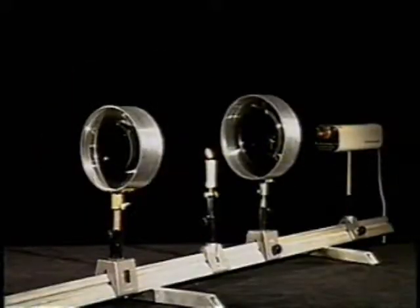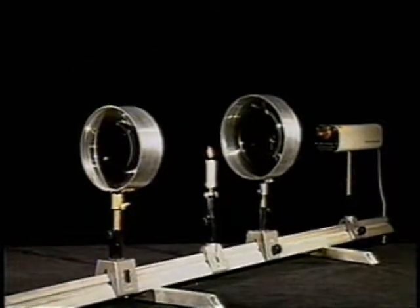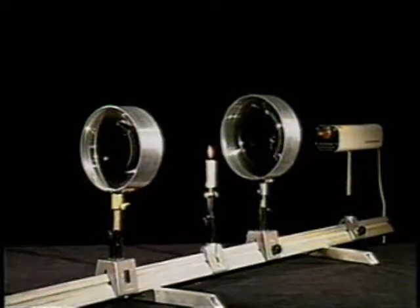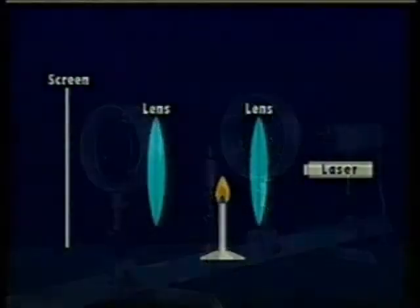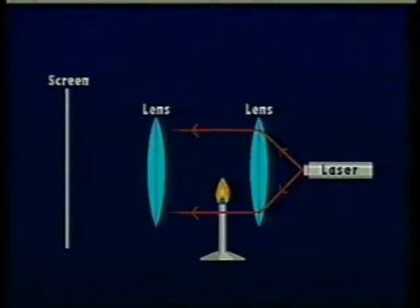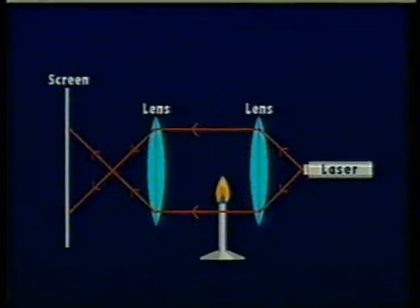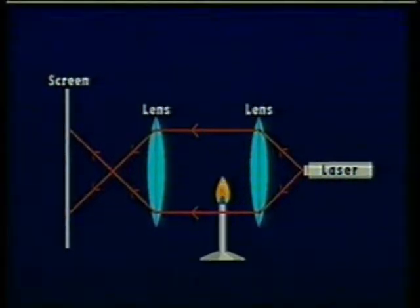This parallel beam then passes through the air above the candle flame and is incident on a second converging lens. Some of the light rays remain parallel as they pass through the air above the candle and are thus brought to a focus at the focal point of the second converging lens. These rays then continue on and form an image on the screen.